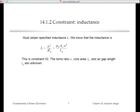The second constraint is that we want to obtain a certain inductance. We have a formula for inductance from previous lectures. In this formula L is given, we know mu-naught, but we have three unknowns: the core area AC, the number of turns n, and the gap length LG. So we've added an equation but also one more unknown.